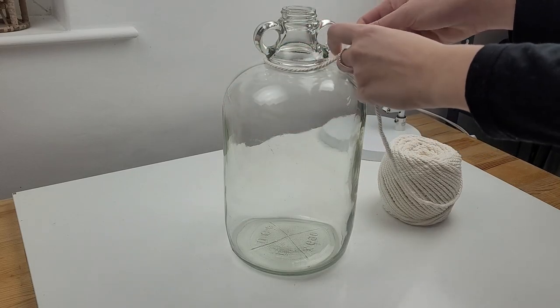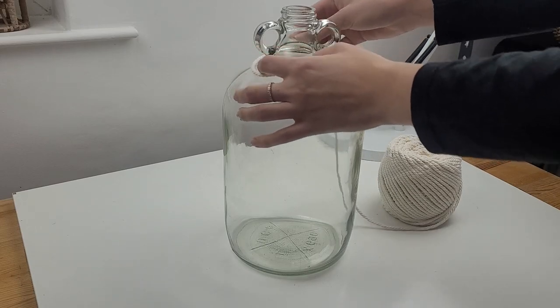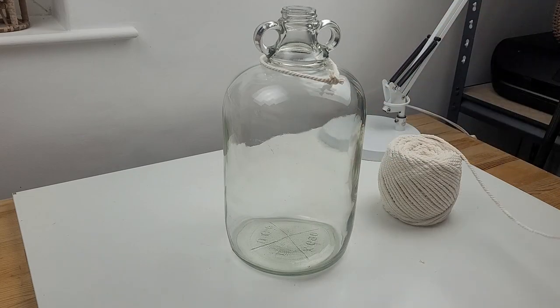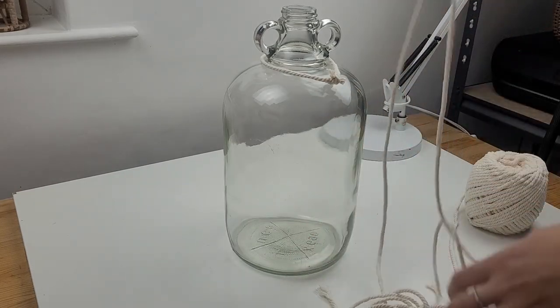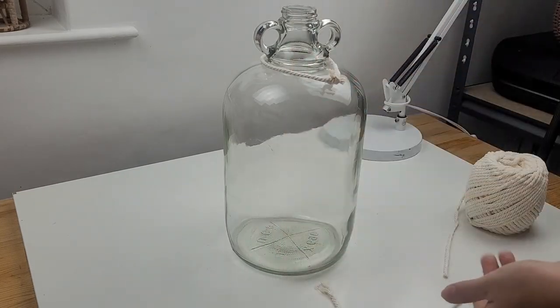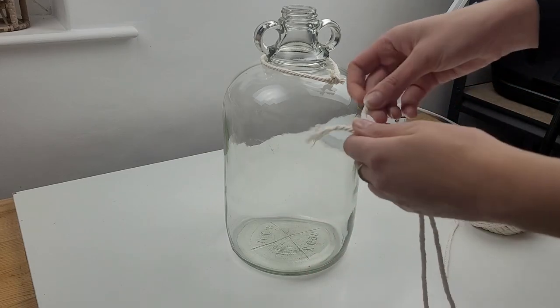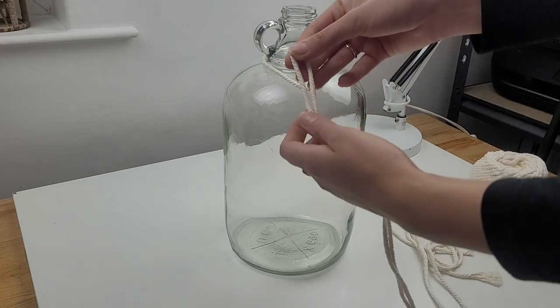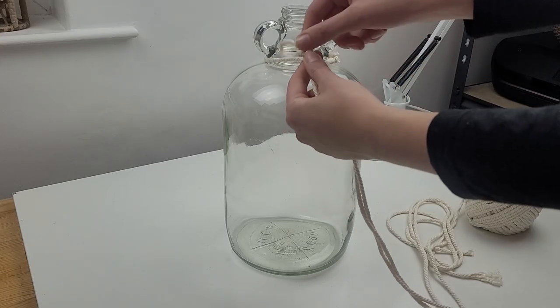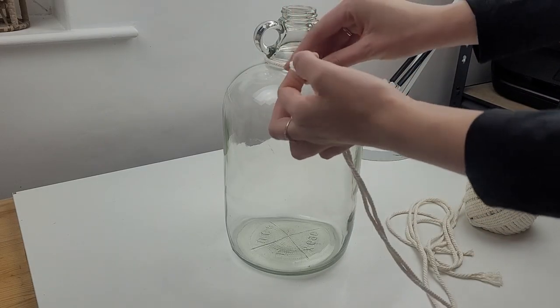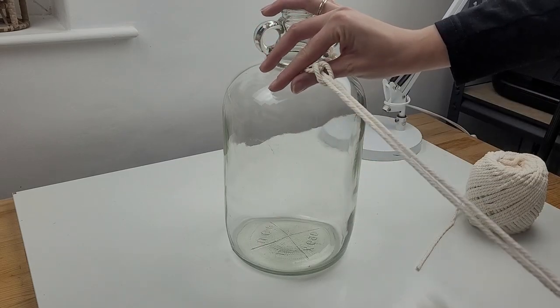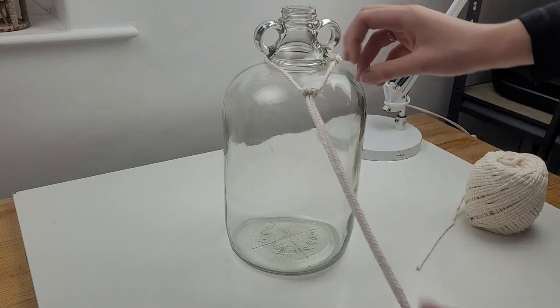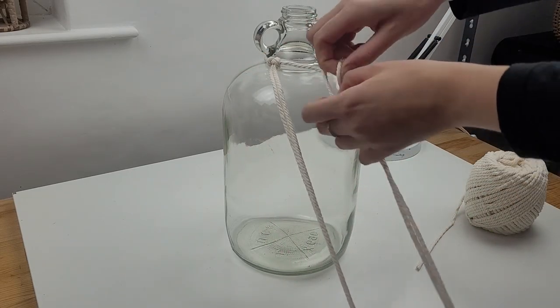I start with creating a loop around the top part of my jar. This will be the beginning of my macrame design. It's almost like a wooden dowel when you're creating wall hanging. To create my design around this jar I will be using 8 pieces of cord, each one about 120cm long. I take first piece, fold it in half and attach it to my loop by creating lark's head knot.